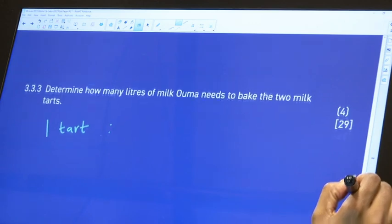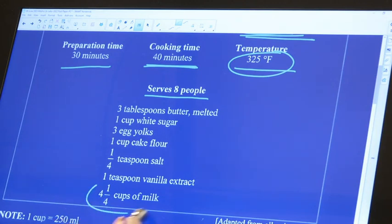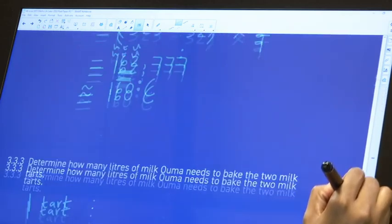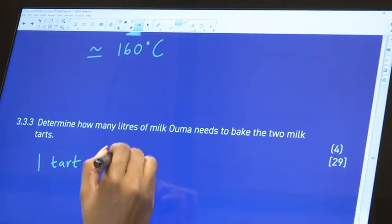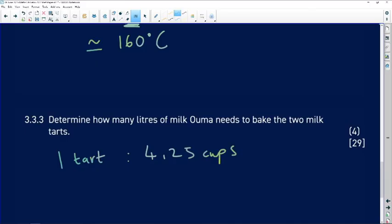For one tart, we need this much cups of milk: 4 and 1 over 4, which is like 4.25. We need 4.25 cups. But we need our answer in liters, so we can convert it to liters a bit later on. So the reason why I'm using 4.25, I mean you could use whatever that you want, but on your calculator it will convert to that either way.